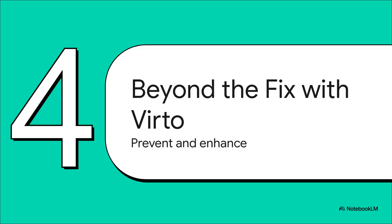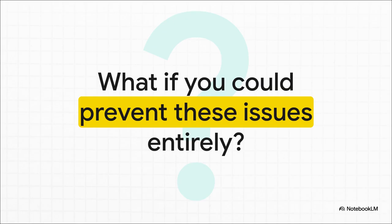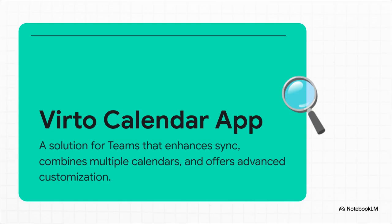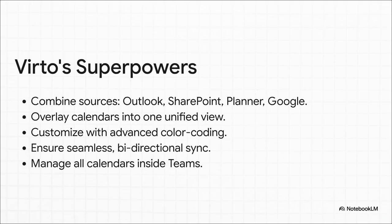We've spent a lot of time fixing things after they break. For our last section, let's talk about something way better: preventing the problem from ever happening again and even upgrading your whole calendar experience with a tool like Virto. All that troubleshooting is a huge waste of time. What if you could sidestep all those native sync issues and display problems and get a calendar that's way more powerful and reliable right inside Teams? That's exactly where tools like the Virto Calendar app come into play. Think of it as a major upgrade to the standard calendar you get in Teams — a specialized app built to give you much stronger synchronization, letting you pull all your calendars from different places into one central hub, combining your Teams SharePoint calendar, tasks from Planner, and even a Google Calendar into one beautifully color-coded view right inside Teams.